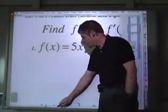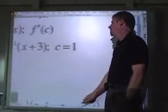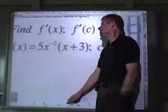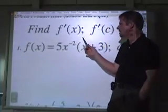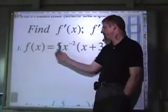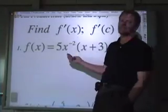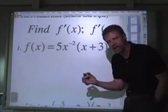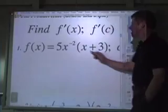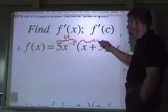So join me on page two, please. And take a look at problem one. The directions read, find f prime of x and f prime of c. So find a function that produces slopes of tangent lines drawn to the graph of f at x coming up with x.